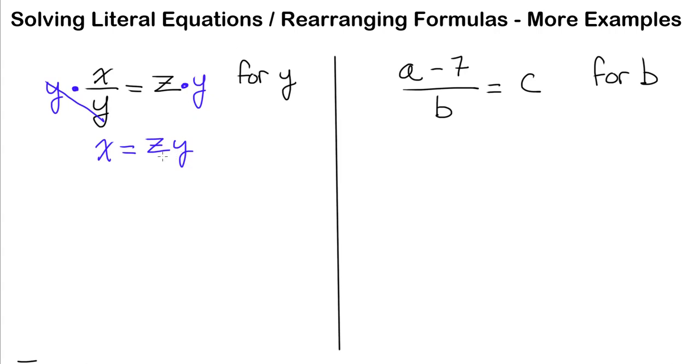In our final step, to get rid of this z so we can isolate y, we see that z is multiplying y. The way we undo multiplication is by division, so we have to divide both sides of this equation by z. We get y equals x over z, and this is our solution.